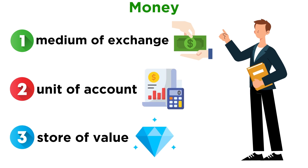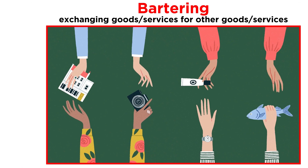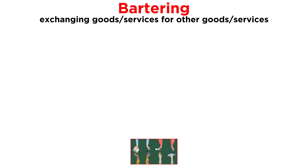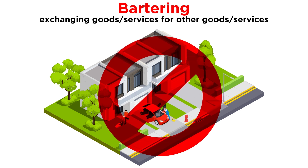A medium of exchange is anything that is used to determine value during the exchange of goods and services. Without money, people get things through bartering, or exchanging goods and services for other goods and services. For example, you might wash your friend's car if they mow your lawn for you. However, bartering is not practical for most transactions.